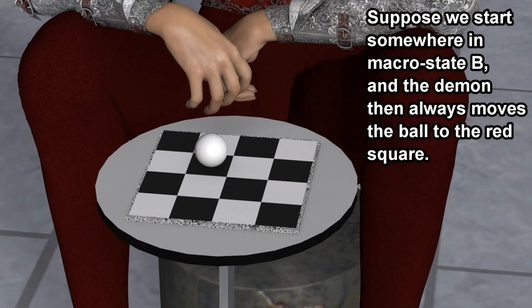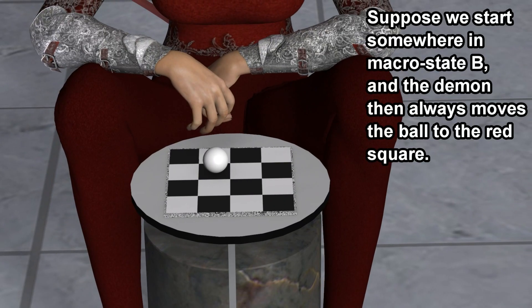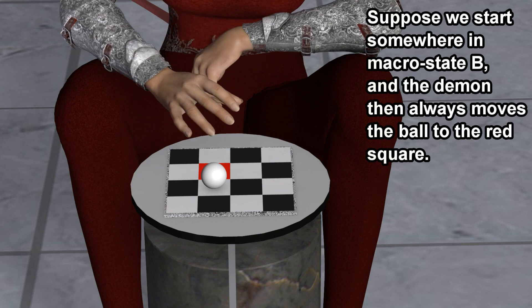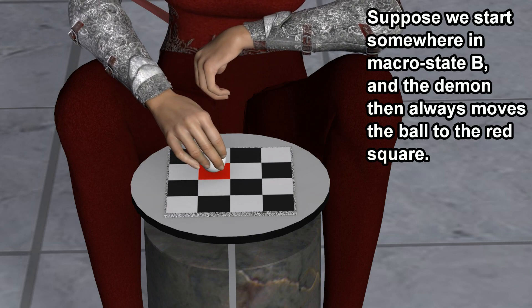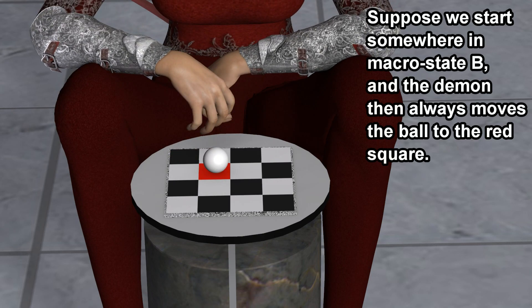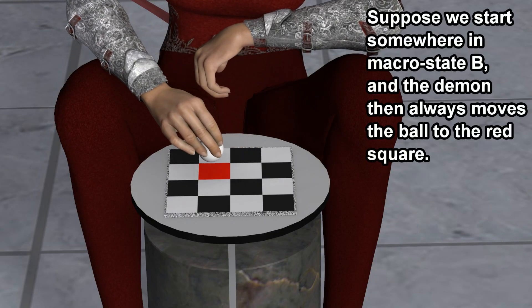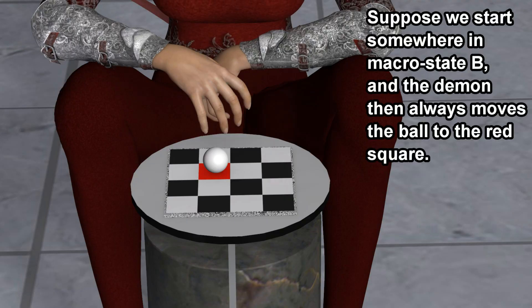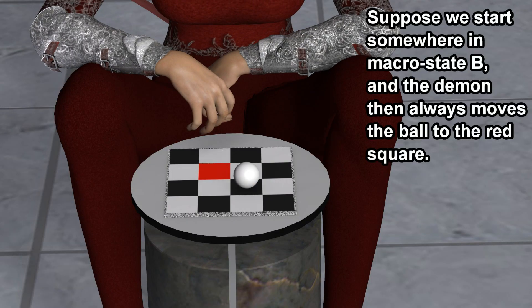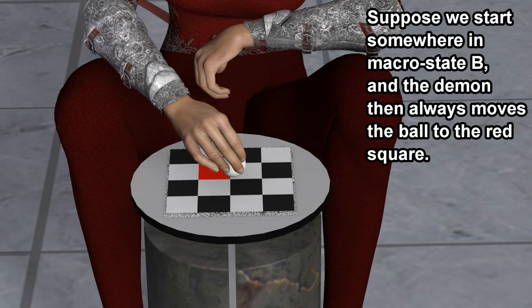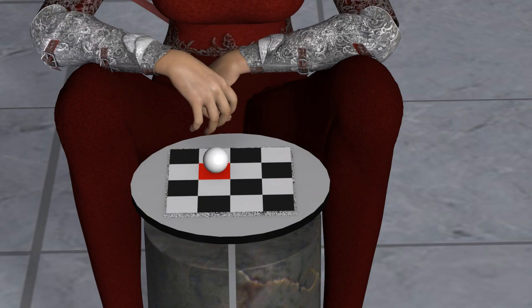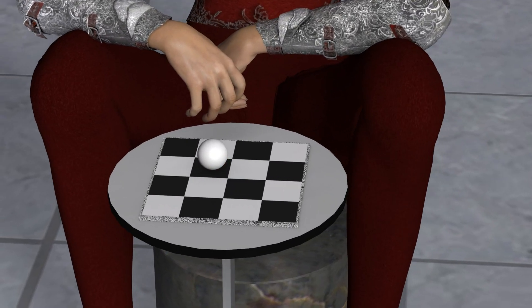Suppose we start somewhere in macrostate B, and the demon then always moves the ball to the red square.